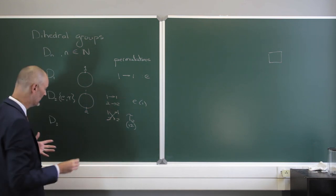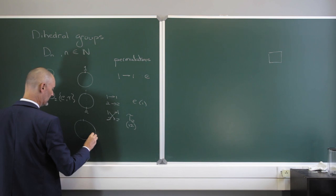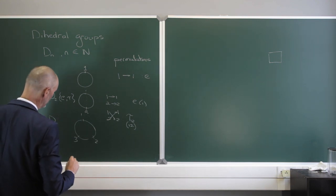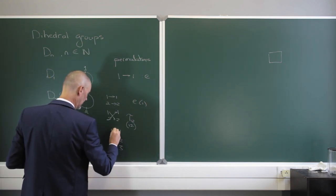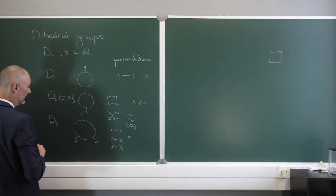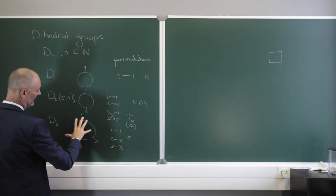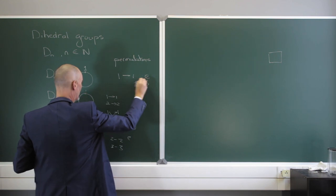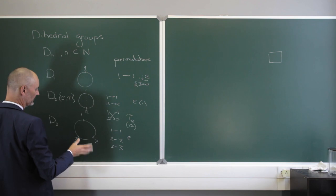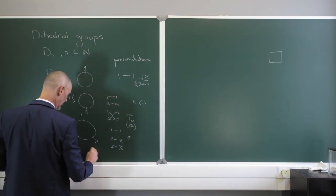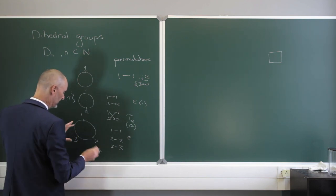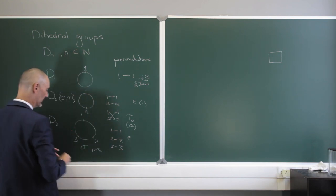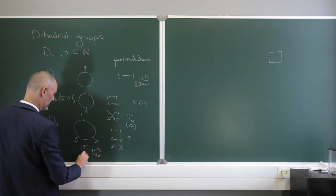When we get to D3, things become more interesting. We have elements 1, 2, 3. The identity element is just 1→1, 2→2, 3→3. We can rotate through 360 divided by 3 — that's 120 degrees. So 1 goes to 2, 2 goes to 3, and 3 goes to 1. We call that sigma. If I go the other way around or do this twice, I get 1→3, 3→2, and 2→1 — that's sigma squared.